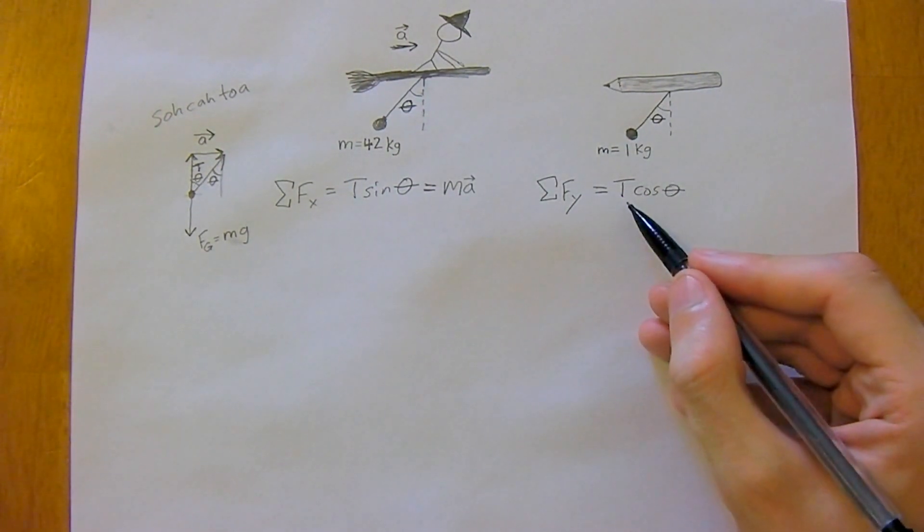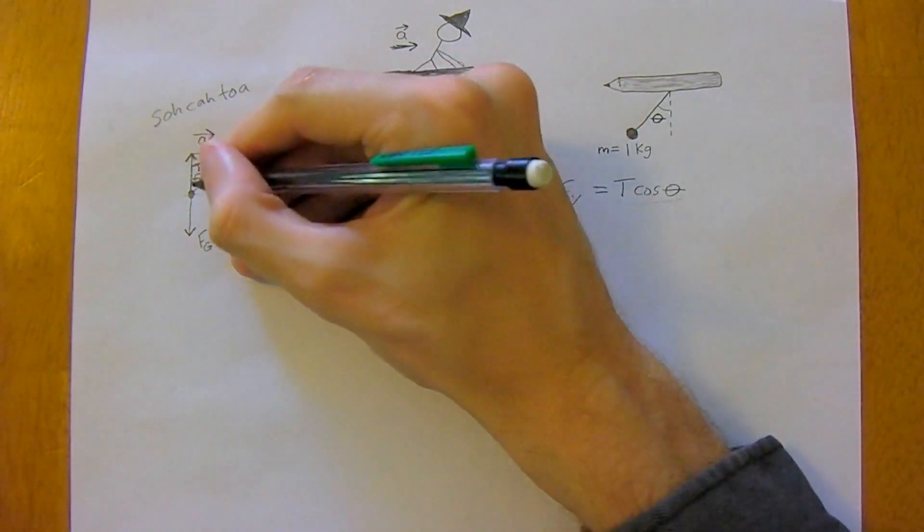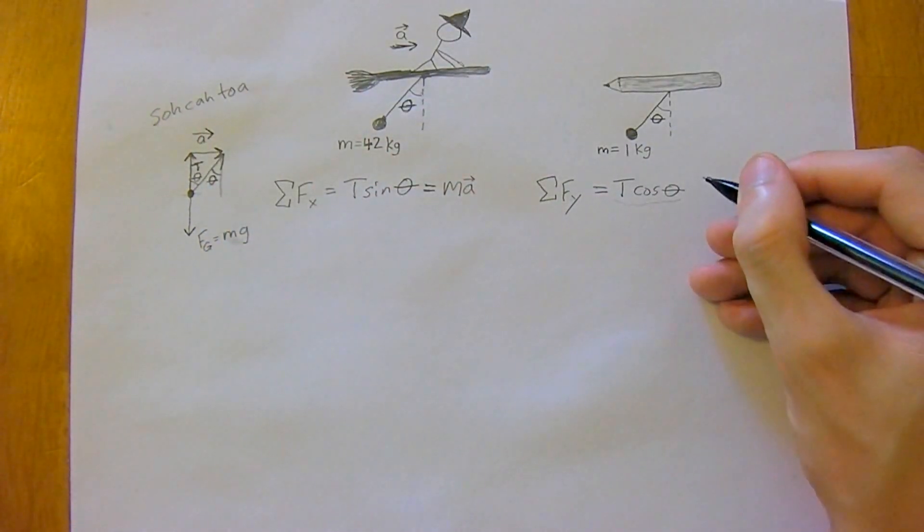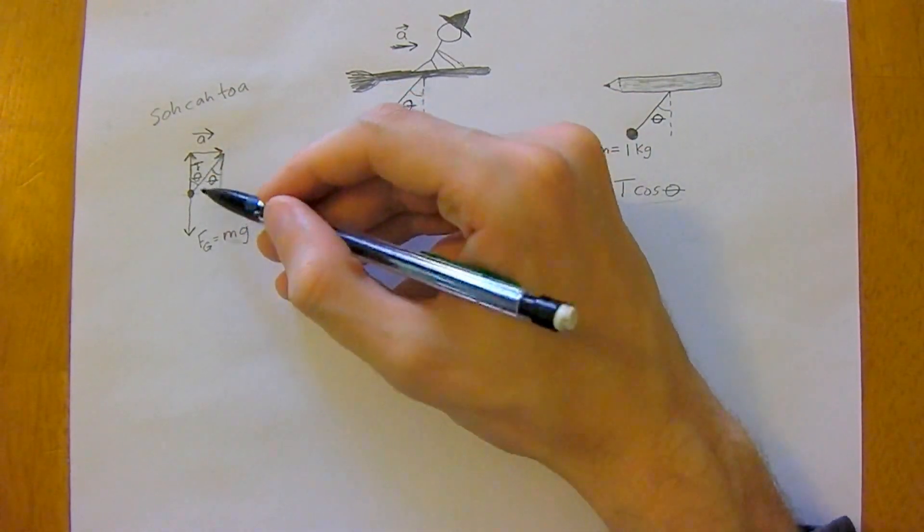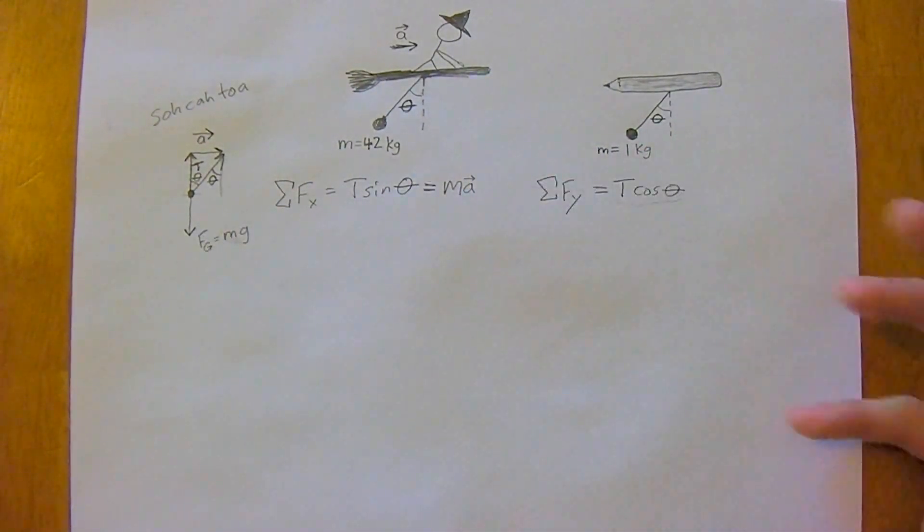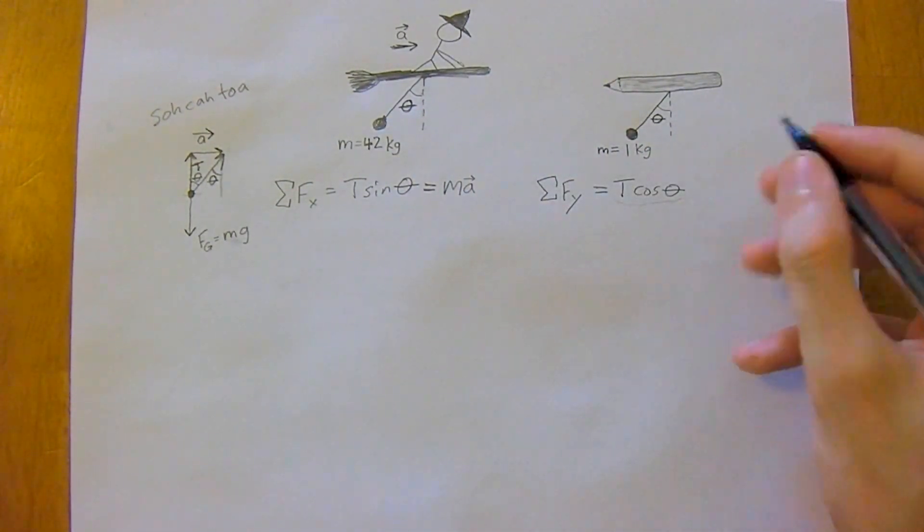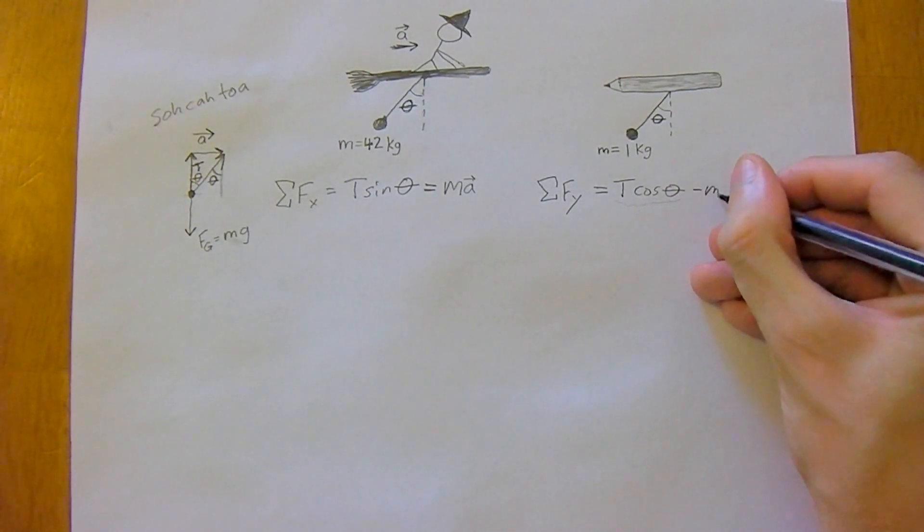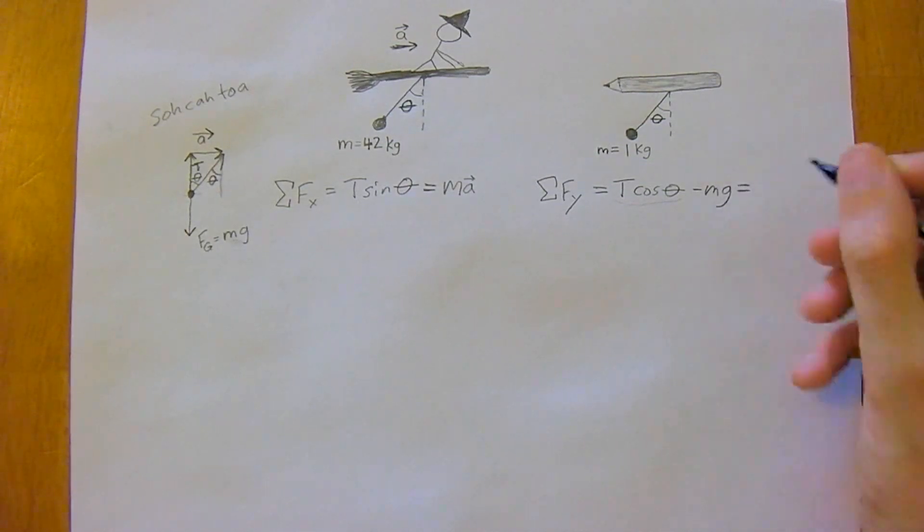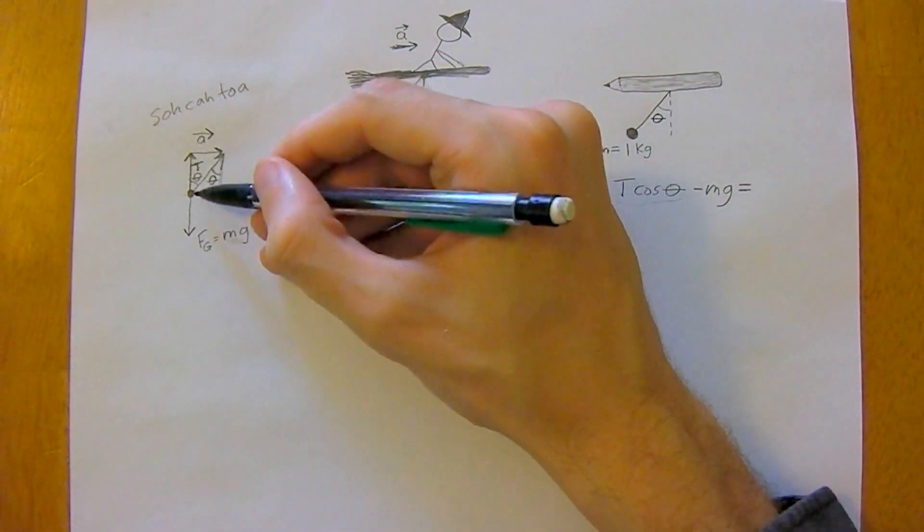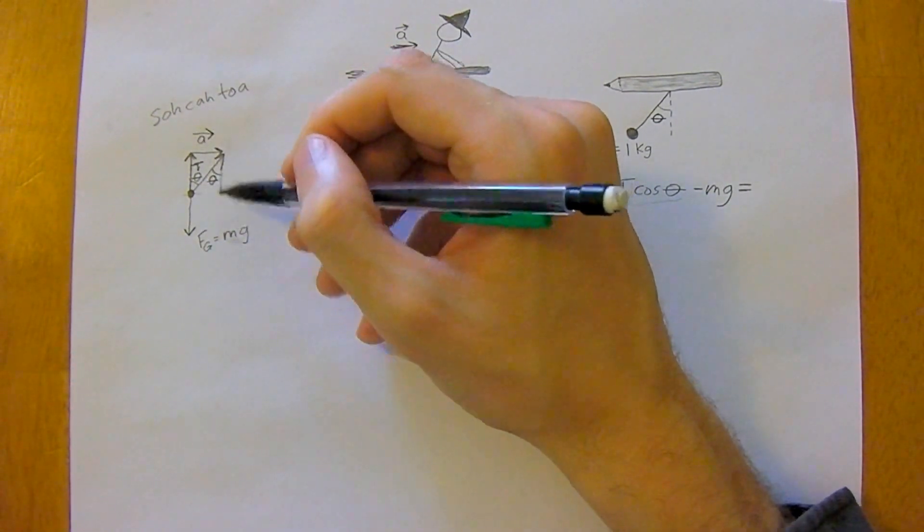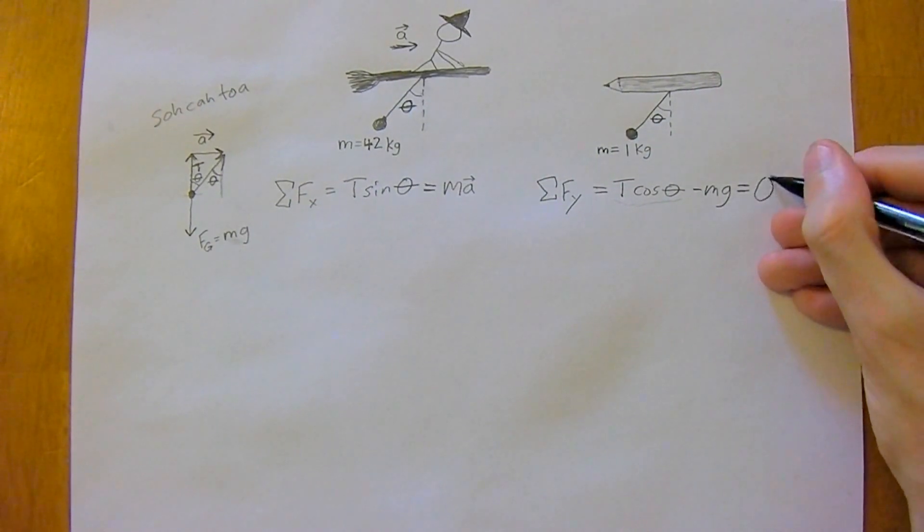We have this component right here, which is the hypotenuse times cosine of theta, and that's positive because it's going in the positive y-direction. Then negative in the y-direction we have negative mg, which is the force of gravity. Is it moving in the y-direction? Well no, it's not, because this acceleration is entirely on the x-axis, so this is equal to zero.